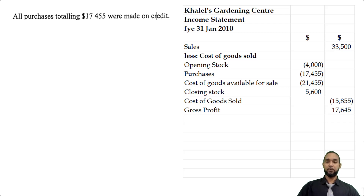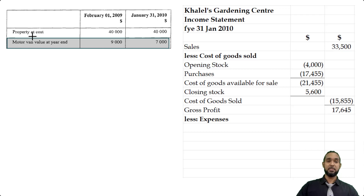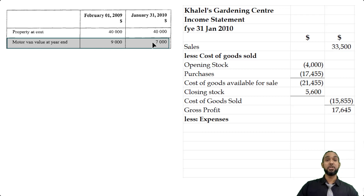That gives us a gross profit of $17,645 when subtracted from $33,500. Now we have the minus expenses. The first expense I put in was depreciation. Now you might ask where did that come from, since the additional information notes didn't mention it. Well, look at the balances — the property didn't change, but the motor van value at year end went down from $9,000 to $7,000. Unless they sold the asset, which they didn't tell us, we safely assume the decrease in value of the non-current asset was depreciation — $9,000 minus $7,000 gives us $2,000.